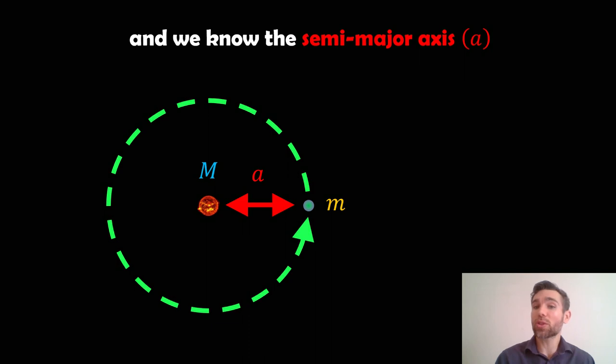Now if we also know the semi-major axis, which if it's going to be a circular orbit, that is just the orbital radius, that distance between the two objects which doesn't change.